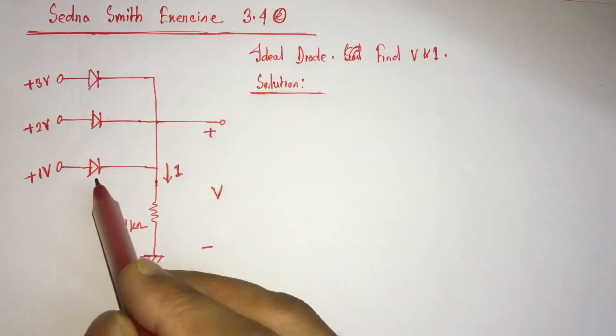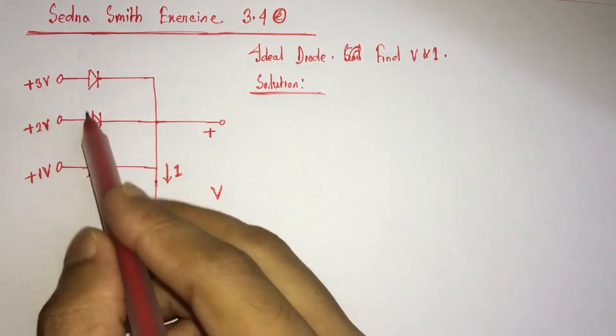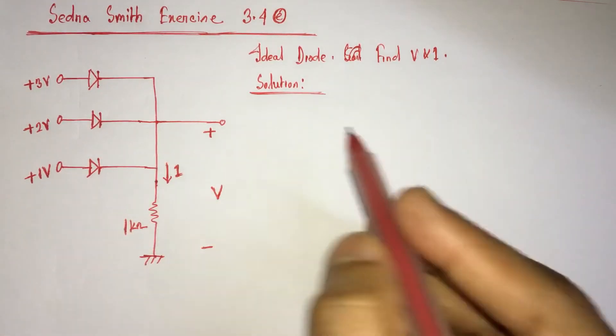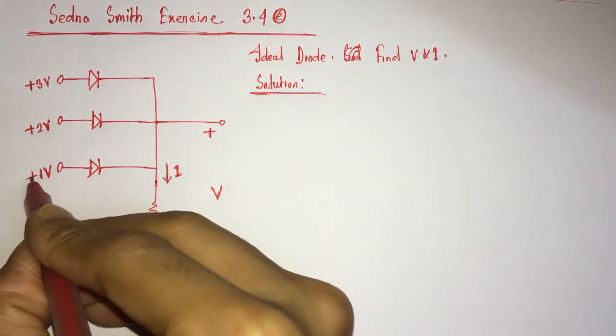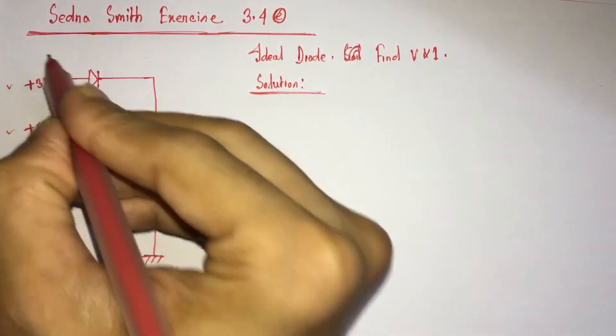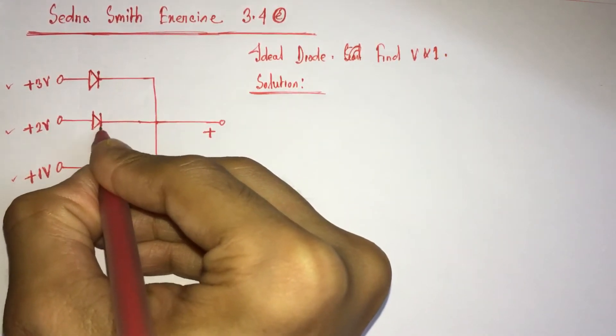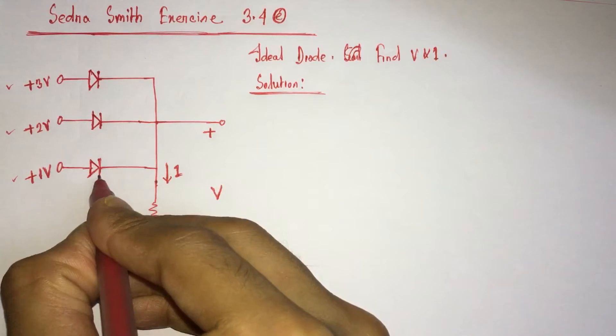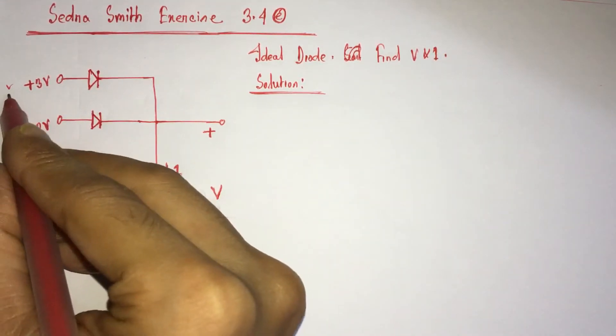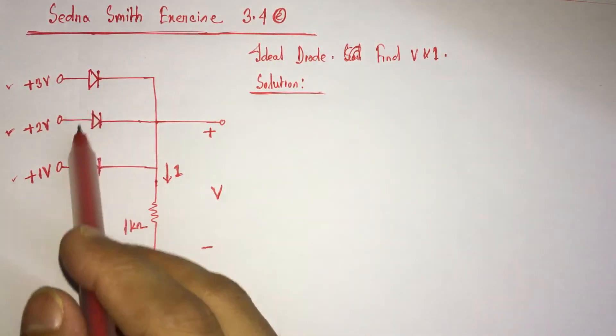From the circuit we see that this is a positive OR gate logic. For positive OR gate logic, here three input voltages exist: 1 volt, 2 volt, and plus 3 volt, and all these diodes are forward biased by three positive voltages. Now the question is which diode will conduct here?